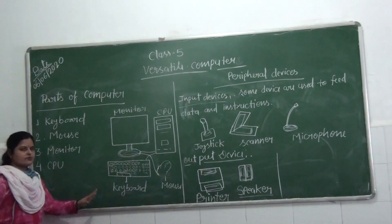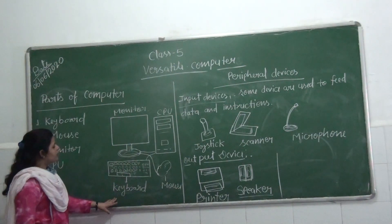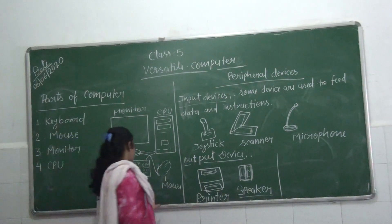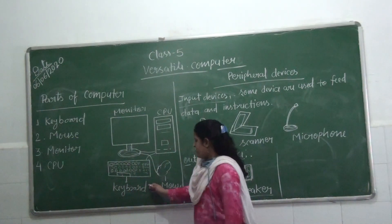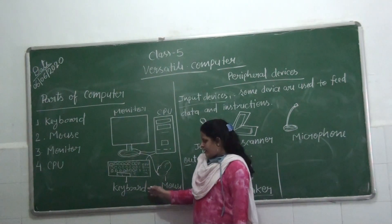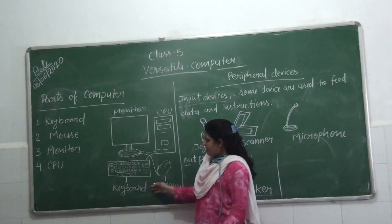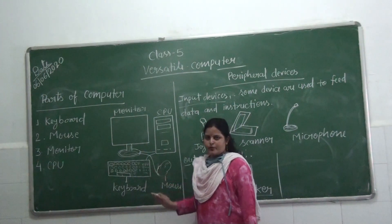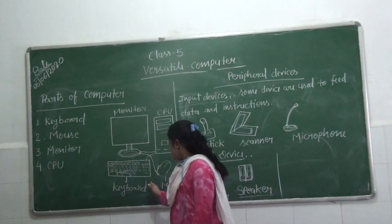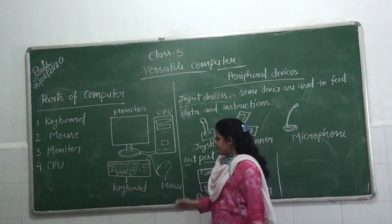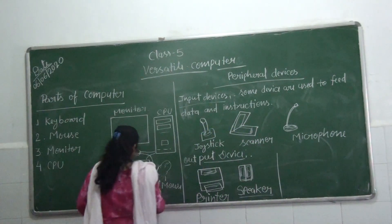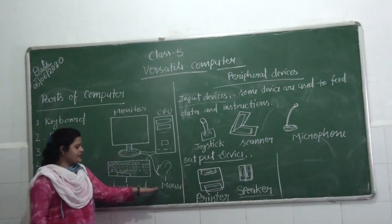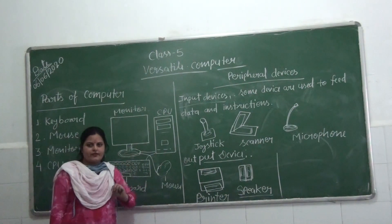First I will start with the keyboard. What is the use of keyboard? Keyboard is an input device. It helps us to input data into the computer. And this is the mouse. Mouse is an input device and it is also a pointing device.